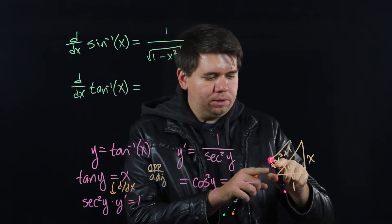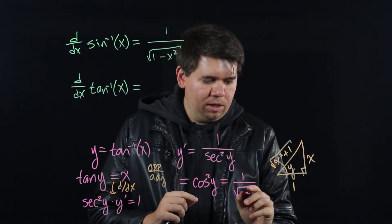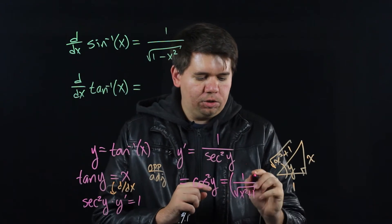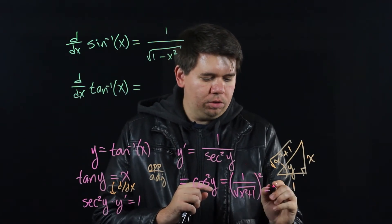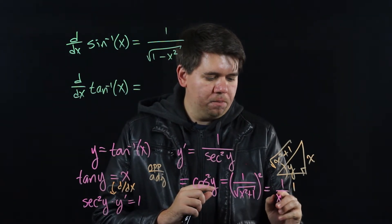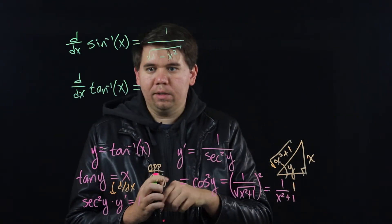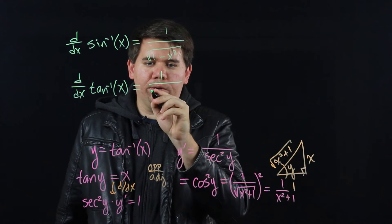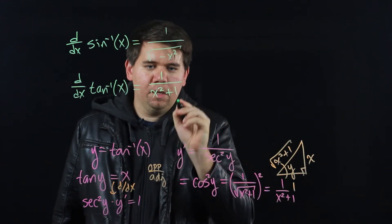My hypotenuse is the square root of x squared plus 1. That's cosine, so cosine squared will just be 1 over x squared plus 1. That is, the derivative of tan inverse is just 1 over x squared plus 1.